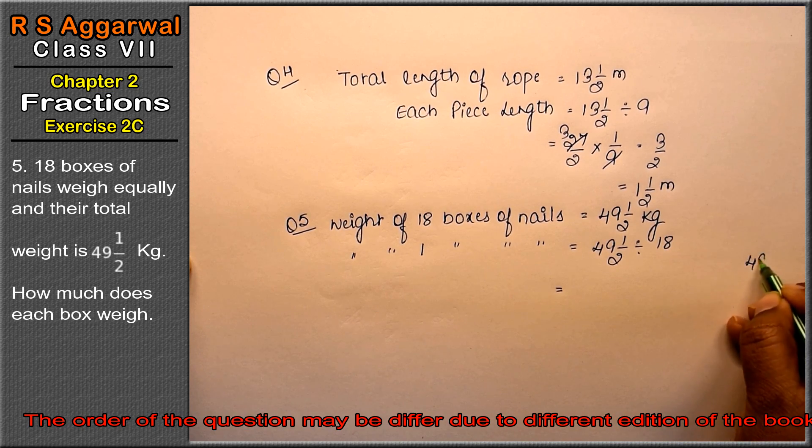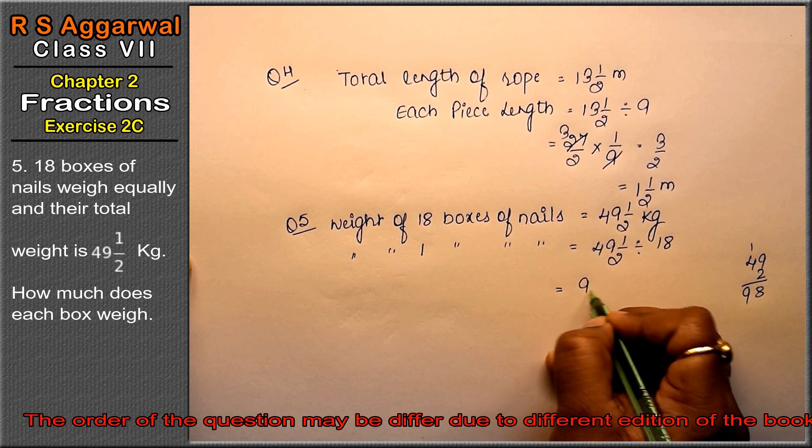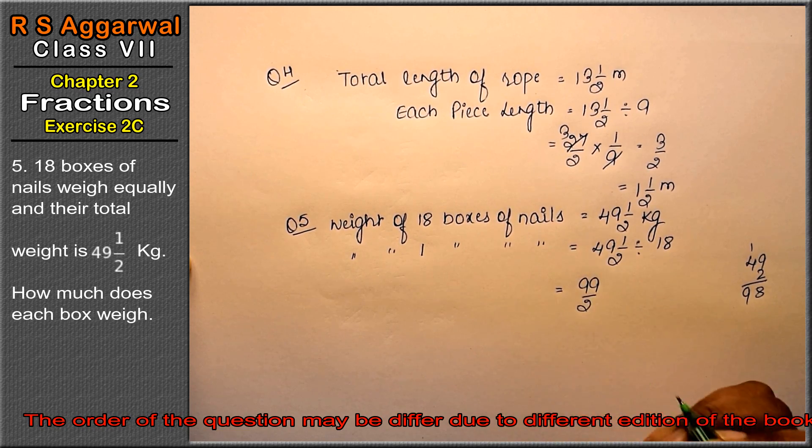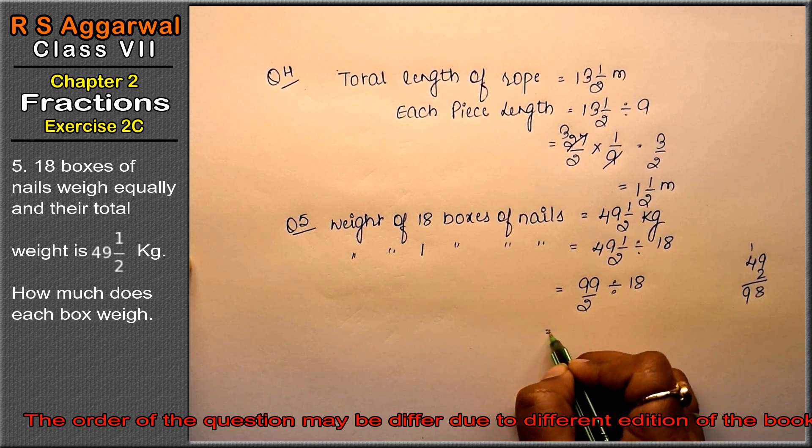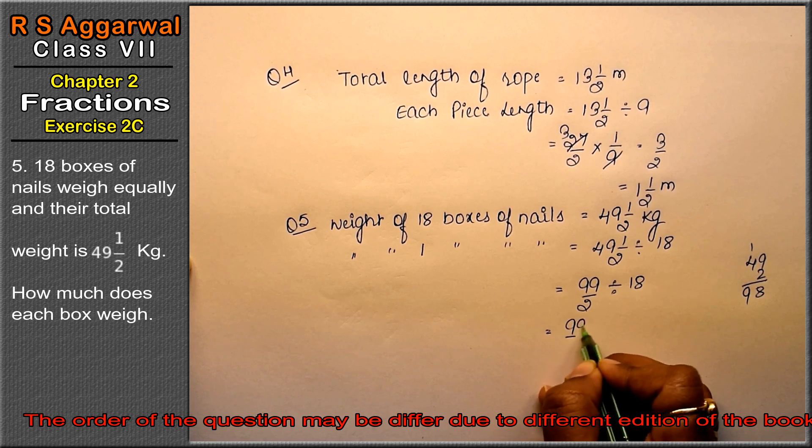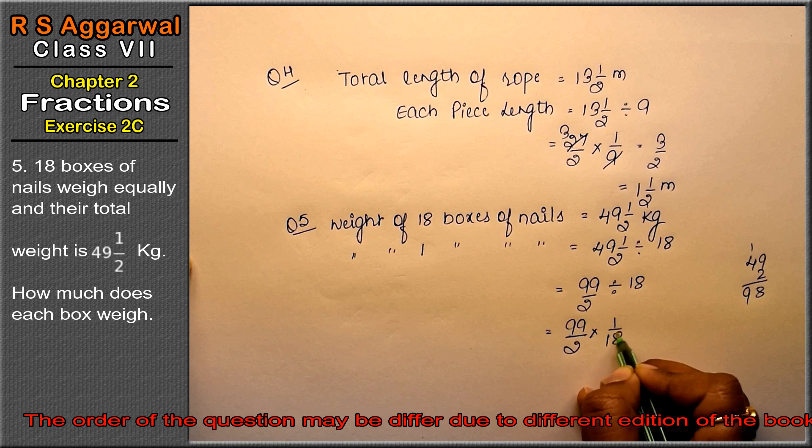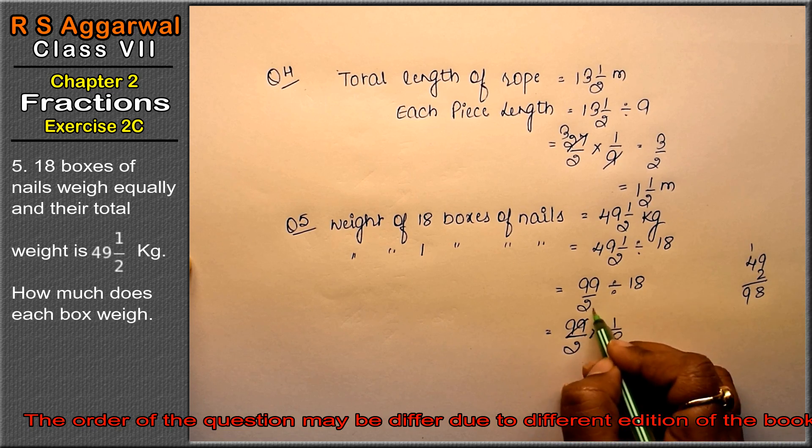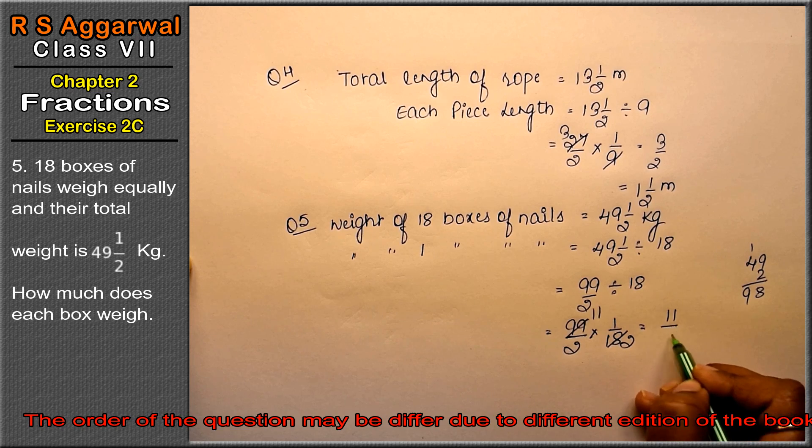49 times 2 is 98 plus 1 is 99. So 99/2 divided by 18. How much is this? 99/2 multiplied by 1/18. Now 9 times 11 is 99, 9 times 2 is 18. That means 11/4.